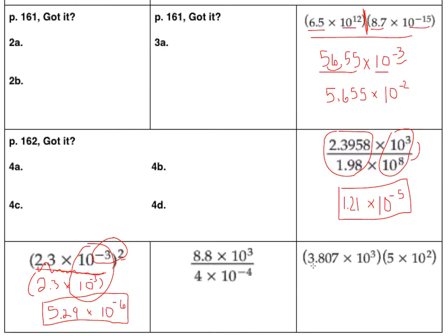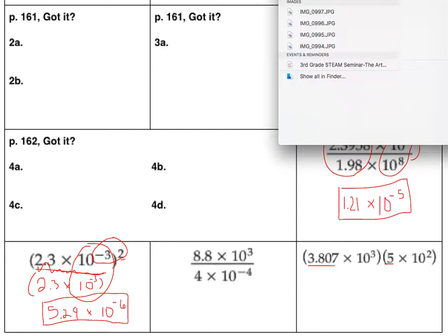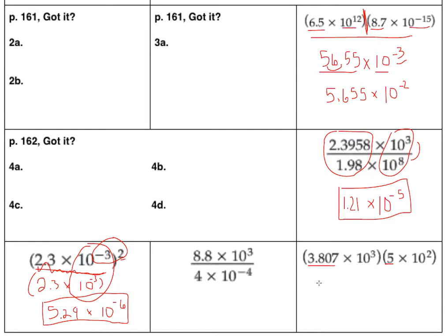I'm going to jump over here to this other multiplication problem with scientific notation. I'm going to take 3.807 times 5 to get 19.035. And then 10 to the third and 10 to the second would be 10 to the fifth. We're going to add those exponents.